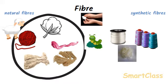We can understand the principle of making cotton yarn by holding a lump of cotton fibers in the left hand and pulling out cotton fibers continuously to get a cotton yarn, though it will not be a fine yarn. Yarn can be made from fibers using three devices: a hand spindle (also called takli in Hindi), which is the simple device used for spinning; a spinning wheel or charkha, which is very well associated with Mahatma Gandhi; and spinning machines used to manufacture yarn at large scale in factories.